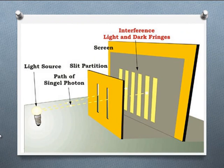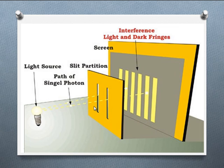In 1801, Thomas Young showed that light had a wave nature when he set up an experiment much like this. He had a light source, a narrow beam of light — obviously not like an incandescent light bulb — and he shone the light through two very narrow slits onto a screen in a very dark room.